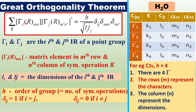Γ_i(R)_mn refers to the matrix element at row M and column N of the i-th irreducible representation for symmetry operation R — for example, Γ1(E)_mn. These elements K1, L1, M1, N1 are unknown and are obtained in the next class by using the Great Orthogonality Theorem. L_i and L_j are the dimensions of the i-th and j-th irreducible representations.